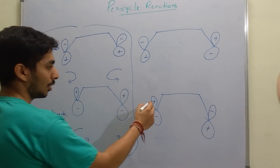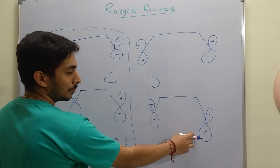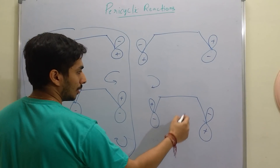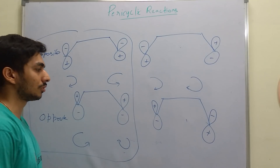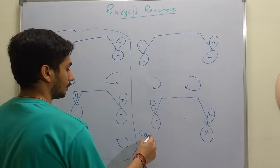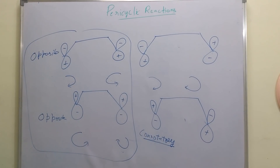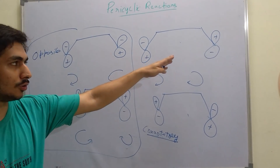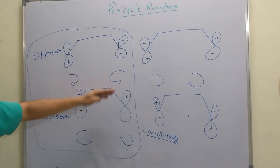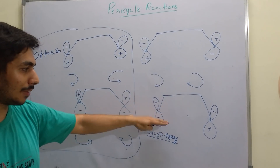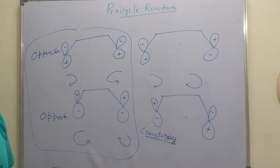But if we have plus-minus on one end and minus-plus on the other, we rotate both in the same direction — both clockwise — so that the plus lobes align for sigma bond formation. Rotating both in the same direction is conrotatory motion. So for those two orientations, conrotatory motion is required. For disrotatory motion, the plus lobes will be on the same side and minus lobes on the same side. For conrotatory, the plus and minus will be on opposite sides.